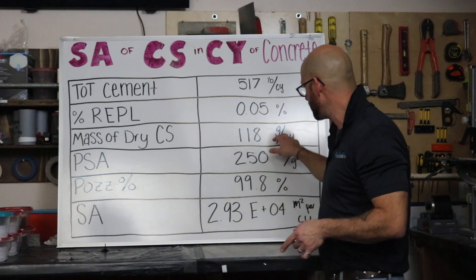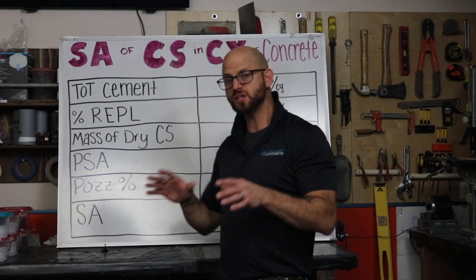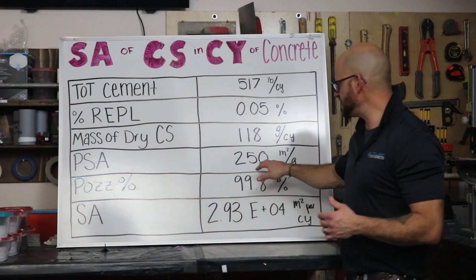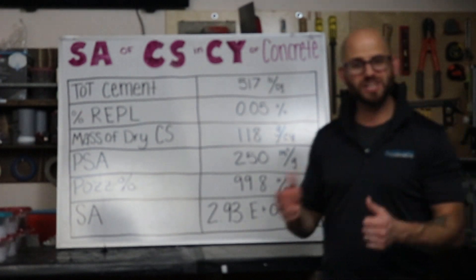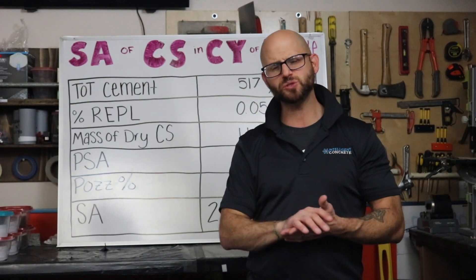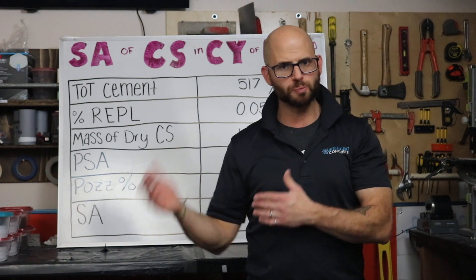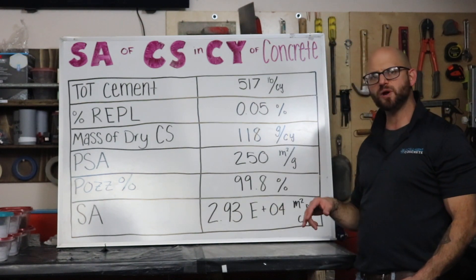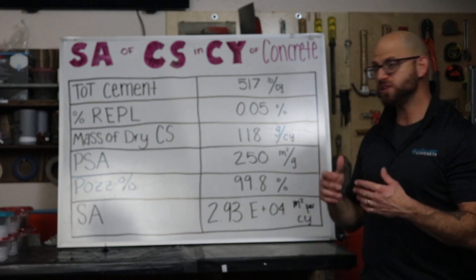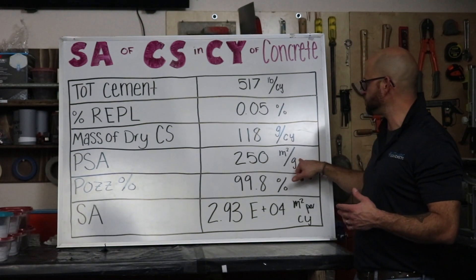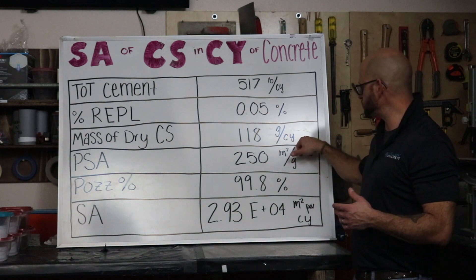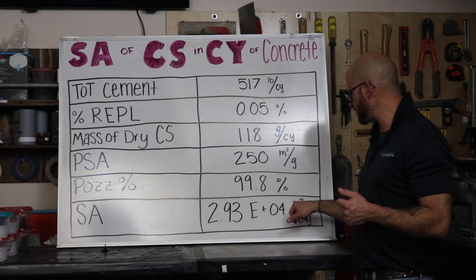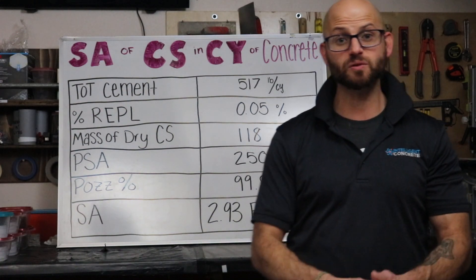For this colloidal silica we have around a 10 nanometer particle, so the particle surface area is 250 meters squared per gram. There is a calculation available — I'll have the link posted to the paper that lets you convert particle size to surface area. This colloidal silica dispersion has a 99.8% pozzolanic purity. Using these values: 250 meters squared per gram times 118 grams per cubic yard times 0.998 pozzolanic purity gives us 2.93 × 10⁴ meters squared per cubic yard.